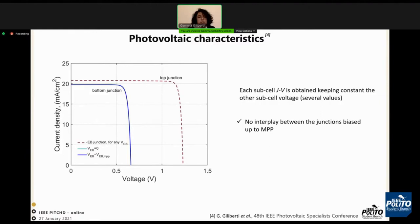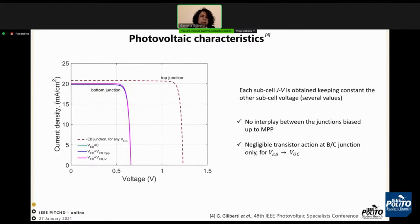Then when the emitter-base voltage approaches its maximum power point, we can observe that the new JV curve is overlapped to the previous one, meaning that there is no interplay between the junctions biased up to their maximum power point. Finally, when the emitter-base reaches its open circuit voltage, the base-collector JV curve is shifted up compared to the previous one due to the negligible transistor effect at the base-collector junction.